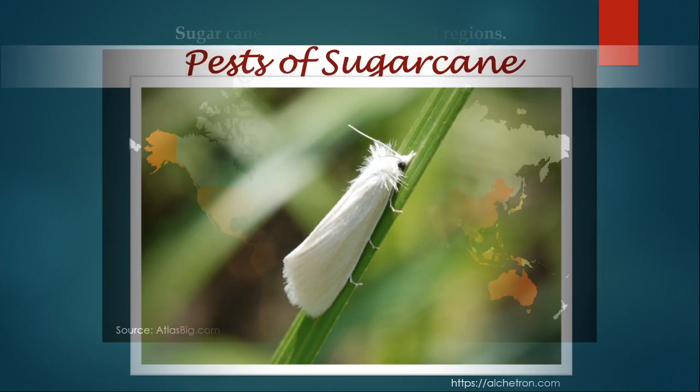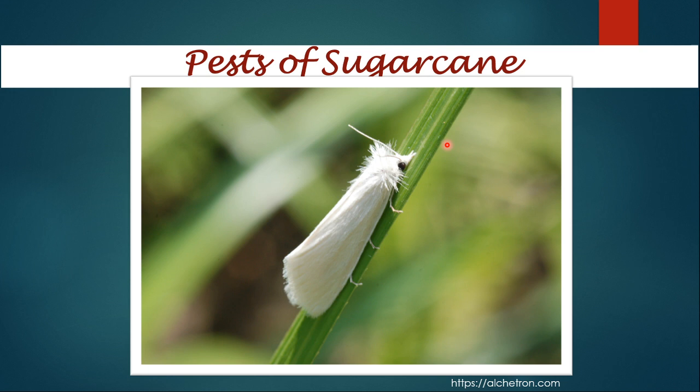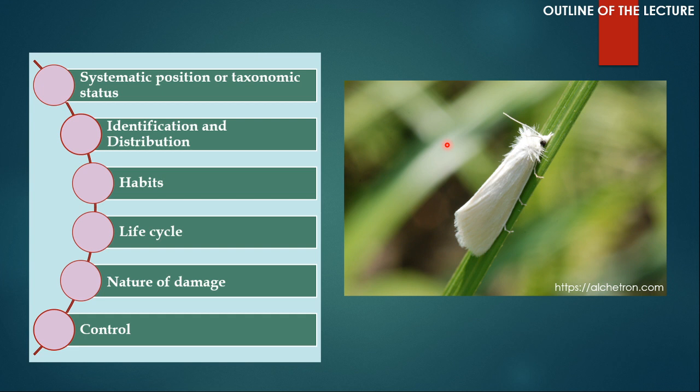In this series, I am talking about three pests of sugarcane, and in this video I am going to talk about sugarcane top borer, Scyrpophaga nivella. To discuss its biology, I am going to cover its systematic position or taxonomic status, identification and distribution, habits, life cycle, nature of damage, and control.